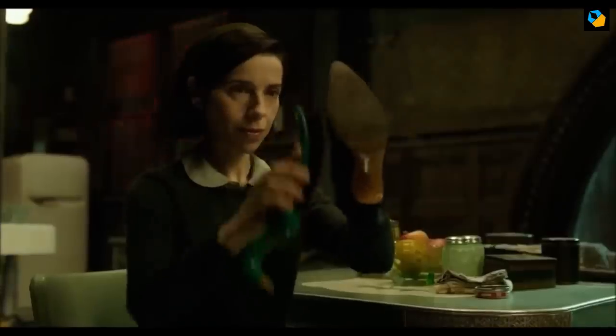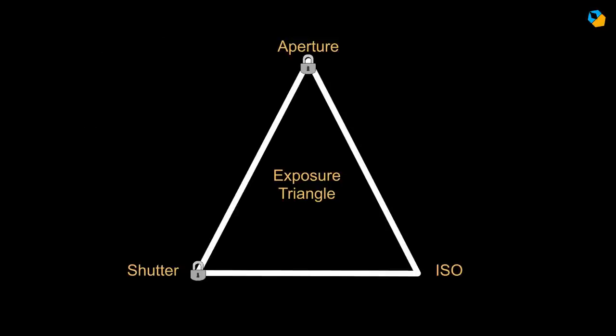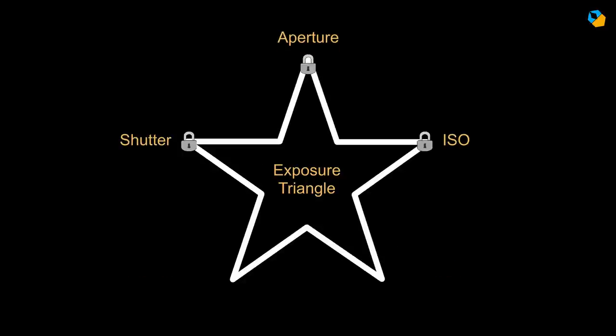Here's a funny situation: the exposure triangle has three tools — the aperture, shutter, and ISO — none of which can be changed for a scene once set. Talk about irony. For cinematic exposure, you need the other two pillars.